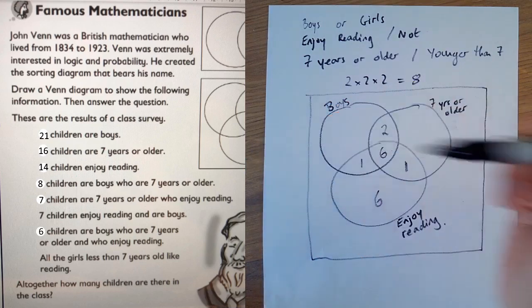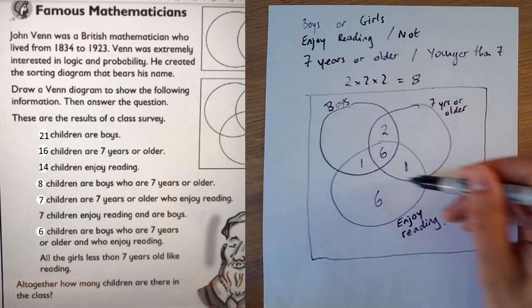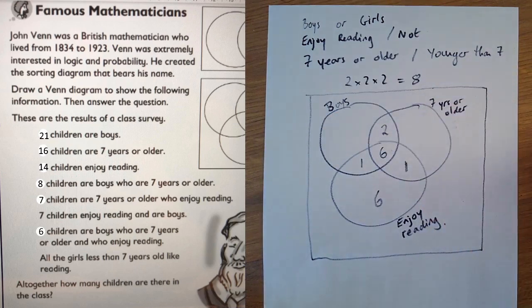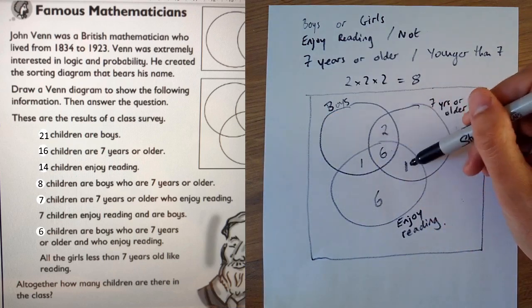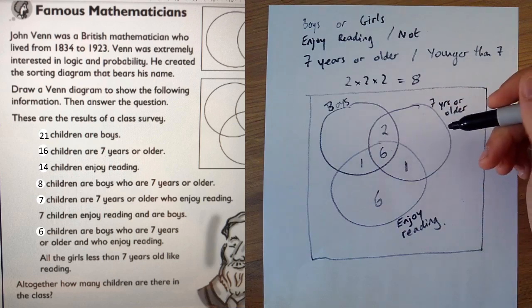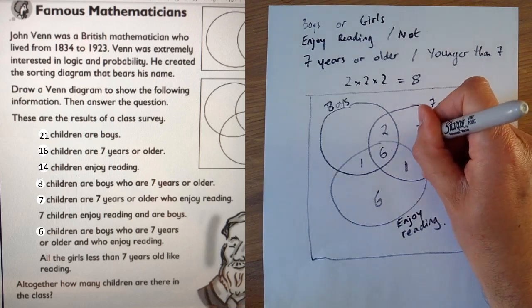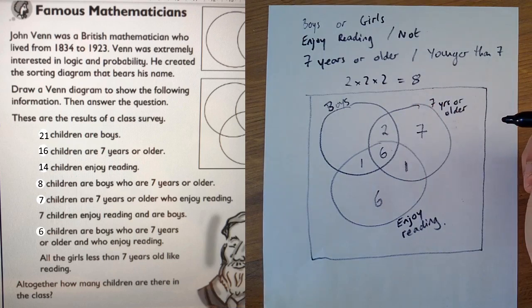Moving up. Sixteen children are seven years or older. Here's your seven years or older. We want 16 children. So far we've got six, eight, nine. Sixteen minus nine is seven. So we want seven children in there.